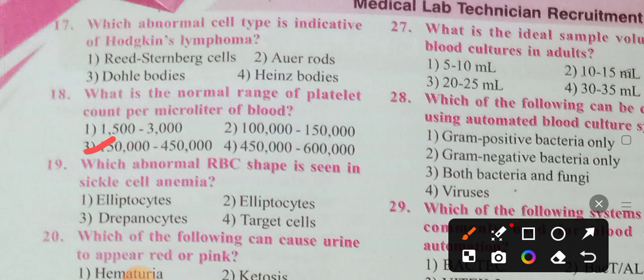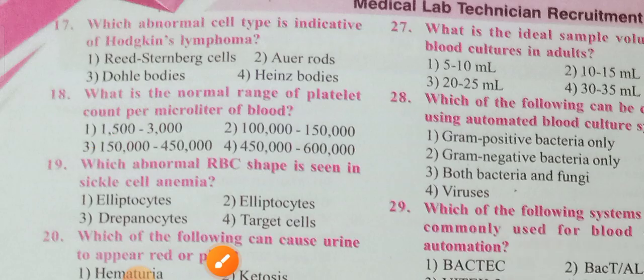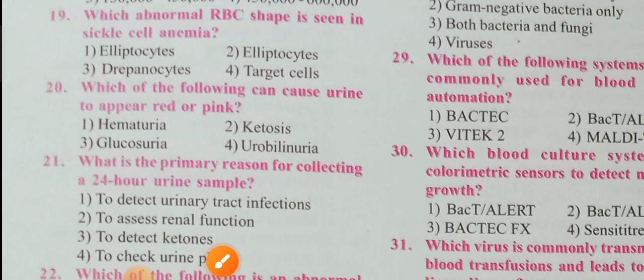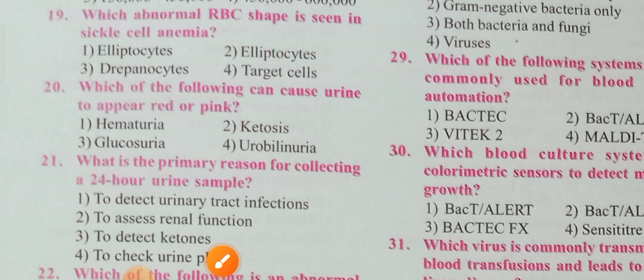Question 19: Which abnormal RBC shape is seen in sickle cell anemia? The correct answer is drepanocytes. Question 20: Which of the following can cause urine to appear red or pink?